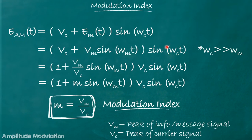The relation between them is ωc >> ωm, that is, carrier frequency is very much higher than the information frequency. From the bracket, if we take vc outside, this equation becomes (1 + (vm/vc)·sin(ωm·t)) × vc·sin(ωc·t).